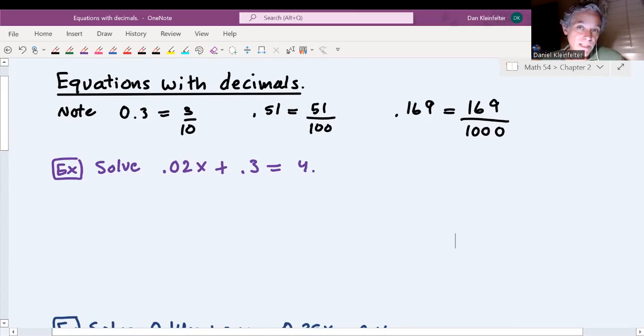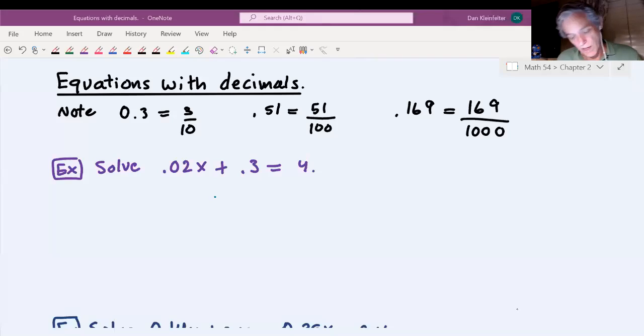And it turns out that what we do when there's decimals is really similar to what we do as fractions because remember that decimals are another way of viewing a fraction. For example, 0.3 is the same as 3 tenths. Let's try that again. So 0.169 is 169 one thousandths.